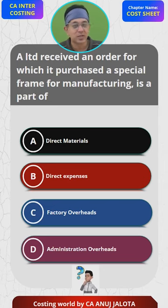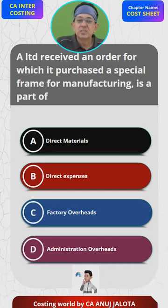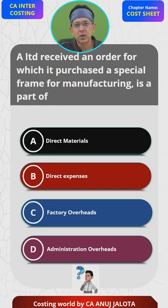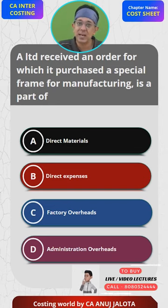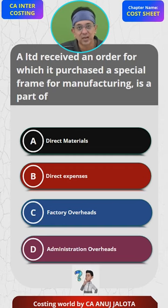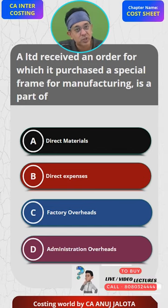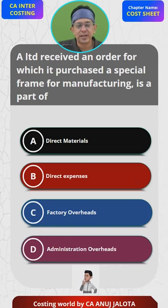Now think — does that frame form part of your product? Is that frame part of the Ganesh Murthy? No, it is not. So it is not direct material. It is not factory overheads, and certainly it is not administration overheads — those are incurred in the office. These are perfect examples of direct expenses. Direct expenses are any direct cost which is not direct material and not direct labor.